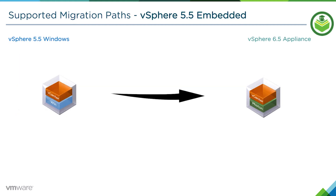Let's take a look at a very basic example for going from a vSphere 5.5 embedded to a 6.5. On the left, we've got our vCenter Server 5.5 Windows with everything embedded on the same machine. It's just a single migration of a VM — we'll go from a Windows vCenter 5.5 to a 6.5 appliance. Very straightforward.